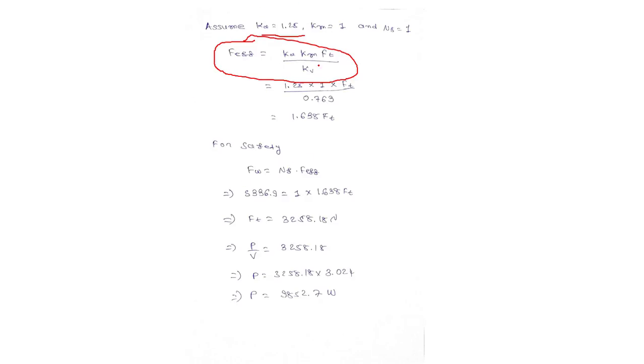Now putting all values in the equation F effective equals ka km ft upon kv, we get 1.638 times ft. We don't know ft yet because we have to find the power. For safety we will use the equation Fw equals nf into F effective. As wear strength is less than beam strength, we are using Fw here. We assume factor of safety as 1 and put the value of Fw and the derived value for F effective.